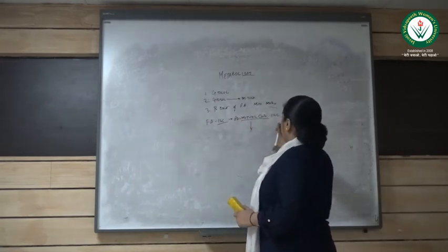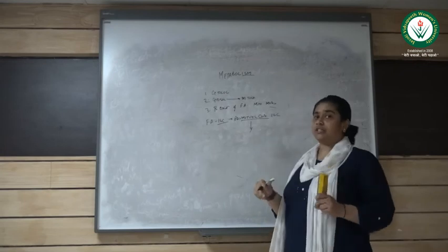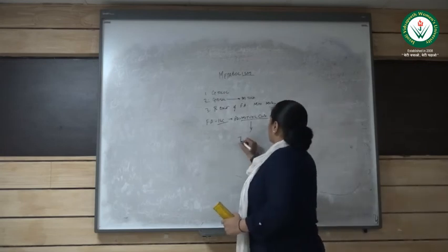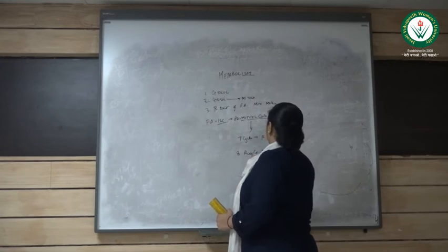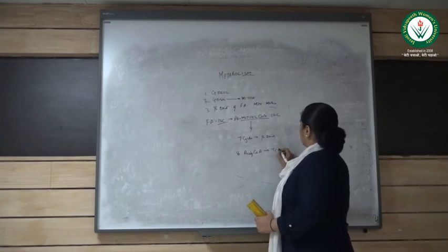So how much of the reaction will go on? There will be seven cycles of beta-oxidation and eight acetyl coenzyme A molecules will be produced that will enter for the TCA cycle.